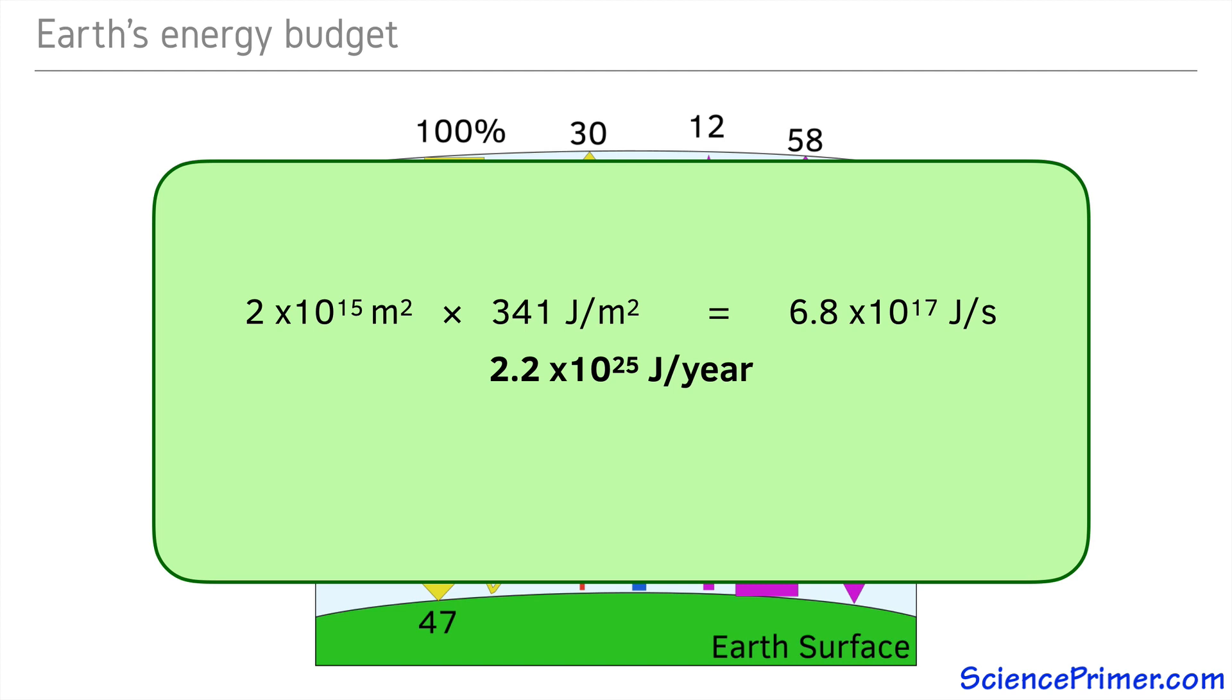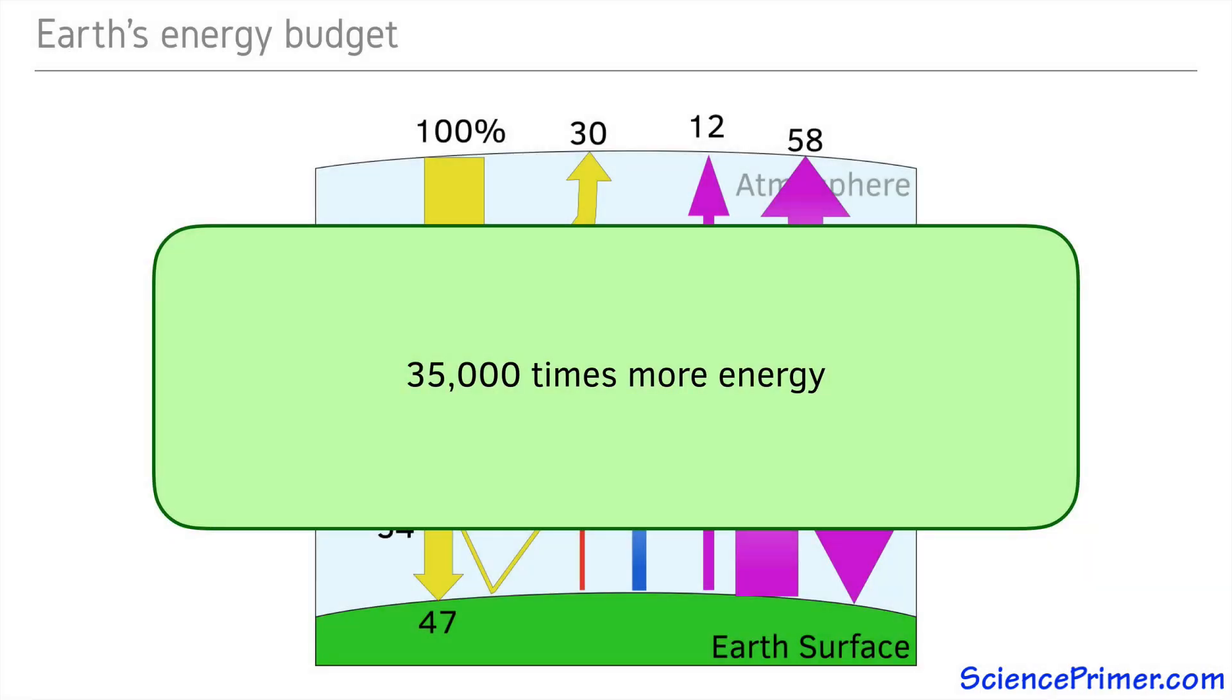This is equal to 2.2 times 10 to the 25 joules per year. For context, it is estimated that humans use a little under 6 times 10 to the 20 joules of energy per year, meaning that the sun delivers more than 35,000 times the energy we consume per year in our highly industrialized society.